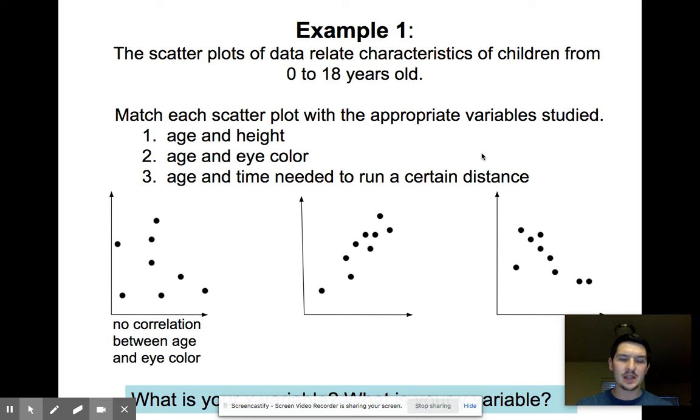And so I'm hoping that you're saying there's no correlation between age and eye color, right? It doesn't matter how old you get, your eye color does not change. So that one would be number three.